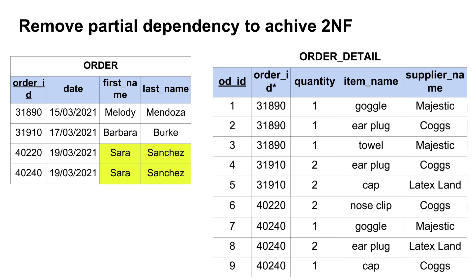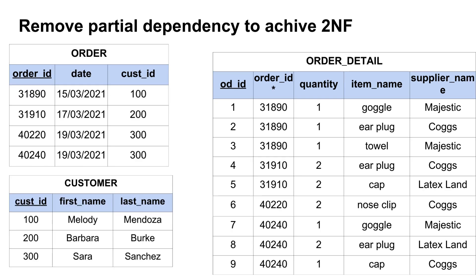Here is our logical data model in first normal form. Let's examine the order table. We can observe that the date is fully dependent on the order ID, but the customer's first name and last name attributes are not dependent on the order ID. If you look at the third and fourth data rows — highlighted in yellow — you'll notice that two orders have the same customer first name and last name. That means, though the order ID changes, the customer's first and last name do not change. So we move those two attributes to a new table — let's call it the customer table.